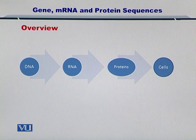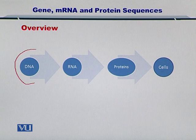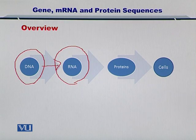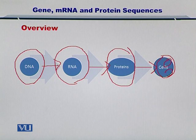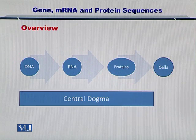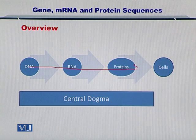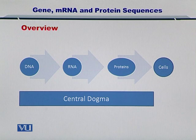Let's take a look at how this information is transferred. As you can see here, the DNA is encoding for an RNA, and the RNA is encoding for the proteins. The proteins form the cells, the membrane of the cell, the organelles within each cell, and the other signaling molecules between the cells. This is termed as the central dogma, and the flow of information from DNA to RNA to proteins is defined as the central dogma.